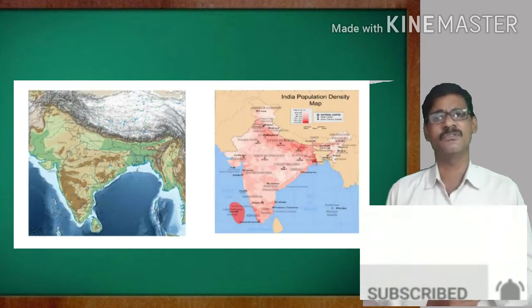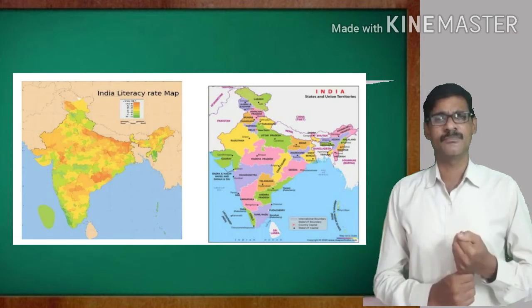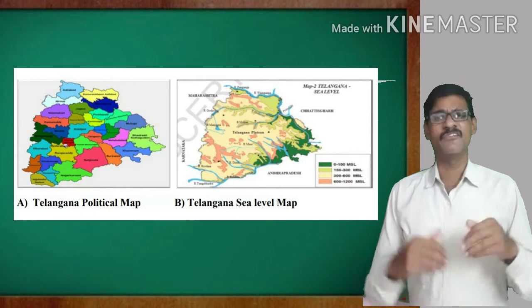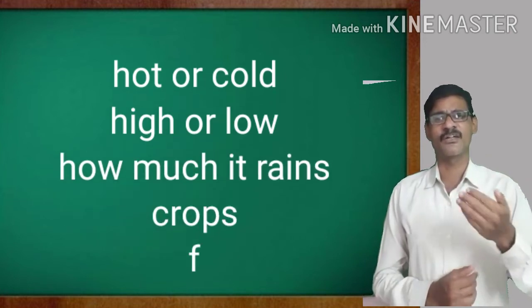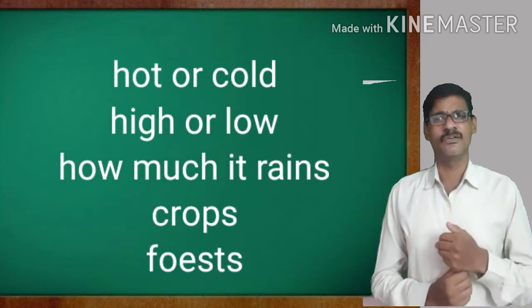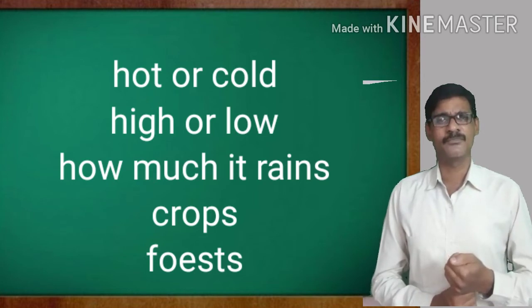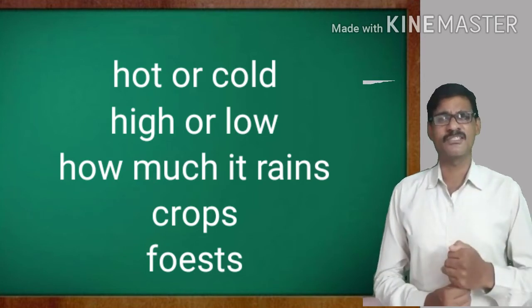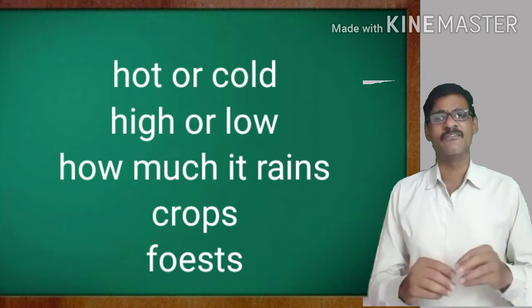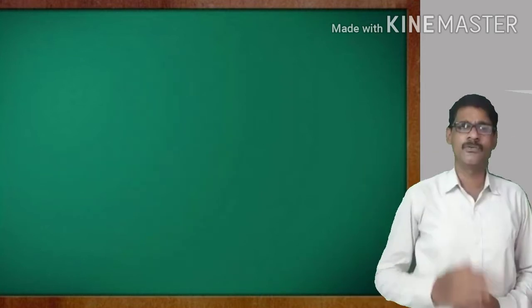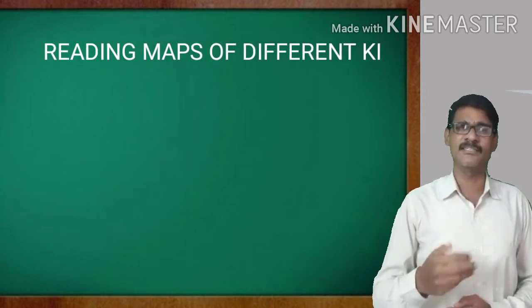So we have learnt in the previous class about some simple maps and the maps give the information about the environmental conditions. Today we are going to learn about the reading maps of different kinds. It is our first lesson.